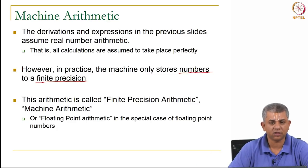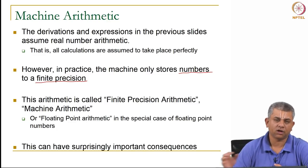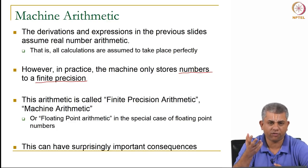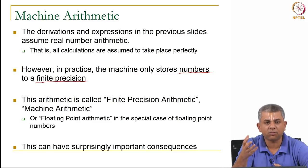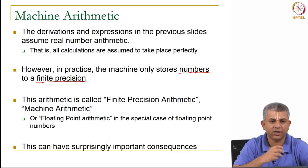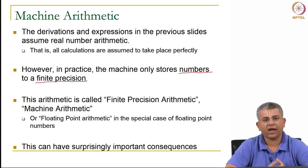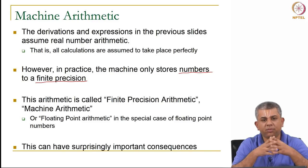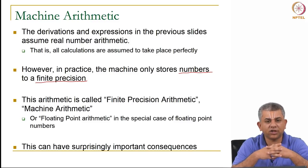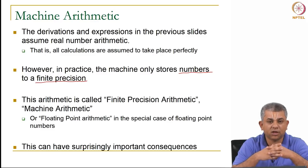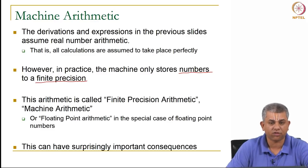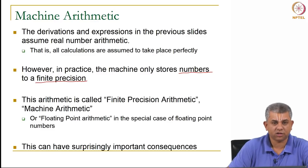But in practice we do not deal with symbols — we actually deal with only numbers, and specifically numbers of finite precision. This kind of arithmetic is called finite precision arithmetic or machine arithmetic. In the special case of floating point numbers it is called floating point arithmetic. Floating point numbers are where we deal with real numbers rather than integers. The fact that we have only finite precision can have surprisingly important and sometimes catastrophically consequential effects.